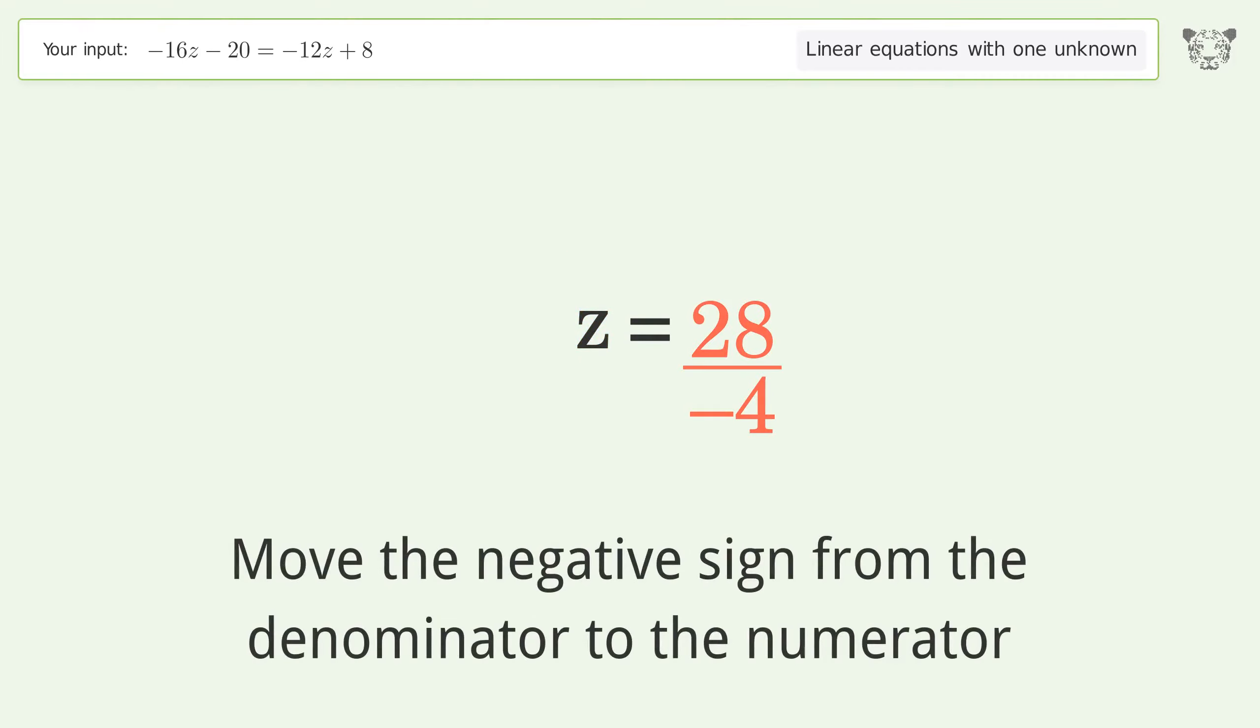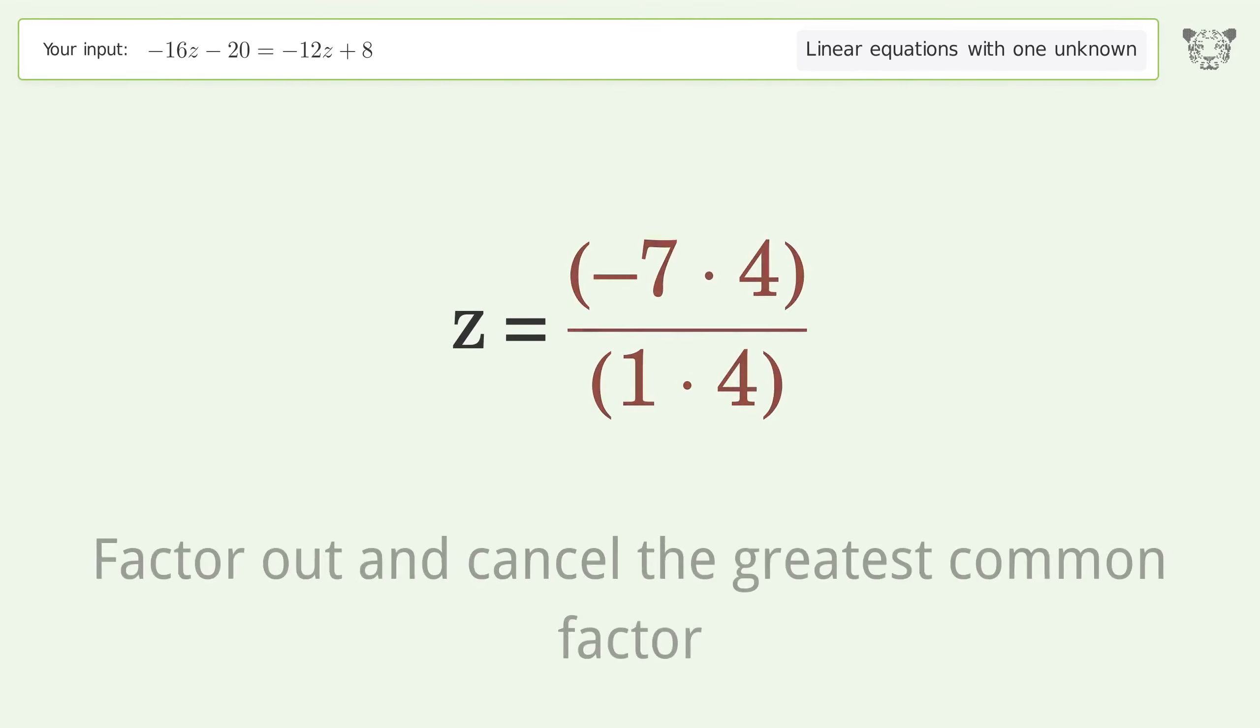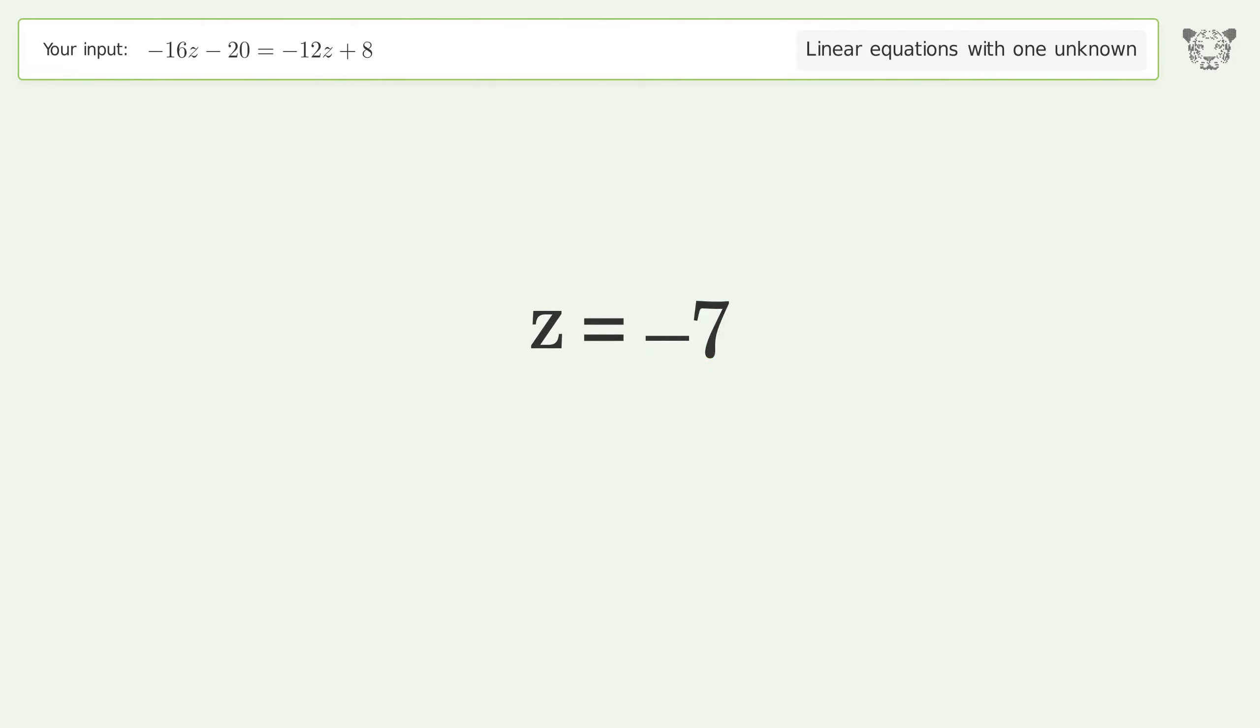Move the negative sign from the denominator to the numerator. Find the greatest common factor of the numerator and denominator. Factor out and cancel the greatest common factor. And so the final result is z equals negative 7.